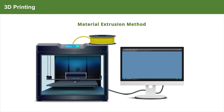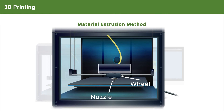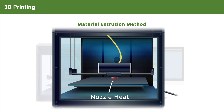Here we are seeing the schematic of the material extrusion method used specifically for thermoplastic materials. The thermoplastic material is in the form of a filament, which comes from a reel and enters the nozzle. The nozzle is heated so that the material can melt.